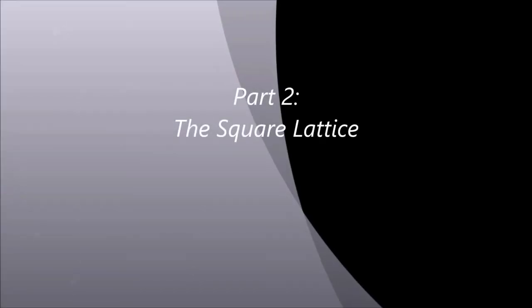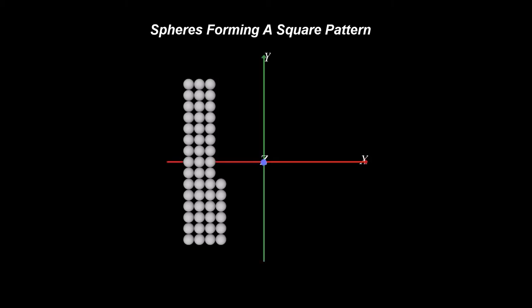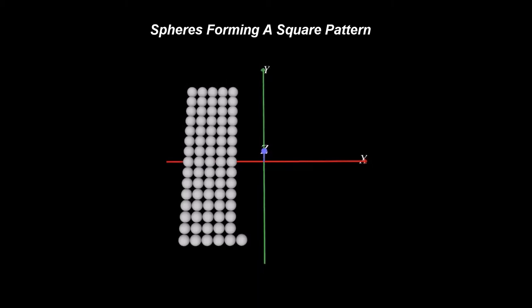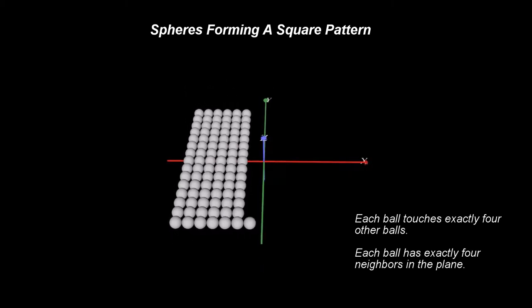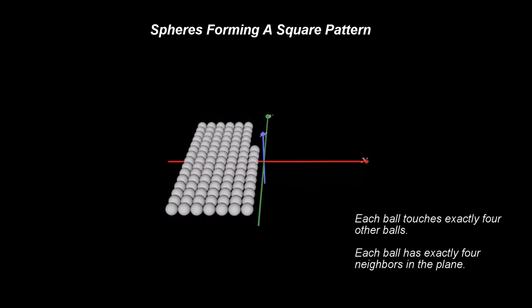Part 2: The Square Lattice. Let's imagine that you are asked to fill up a room with ping pong balls. Being a very organized person, you start arranging the balls on the floor next to each other, such that each ball touches exactly 4 other balls. Each ball has exactly 4 neighbors in the plane.